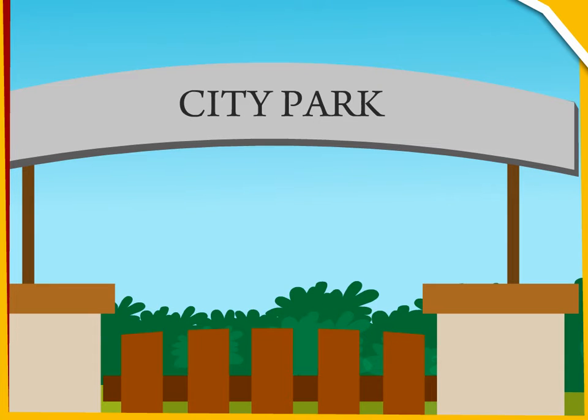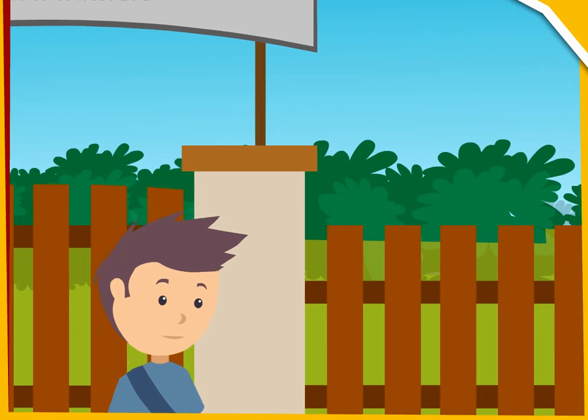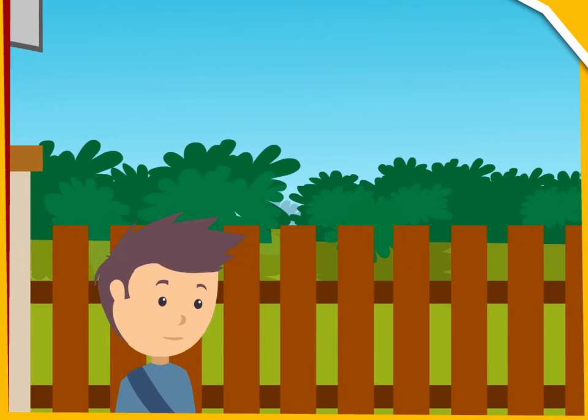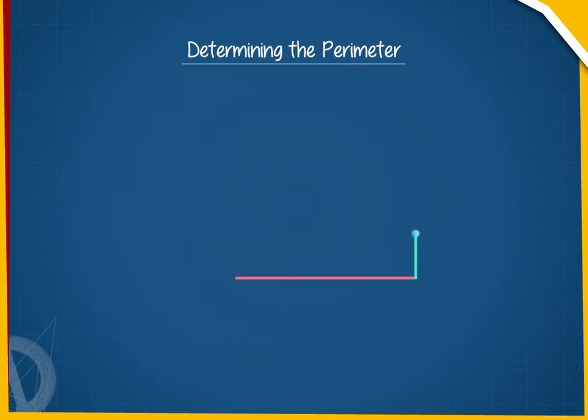This is a park. Sohan starts from the gate and takes a full round of the park. The distance covered by Sohan is the perimeter of the park.